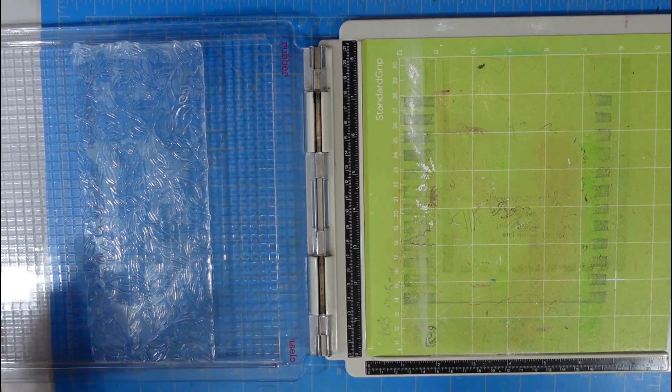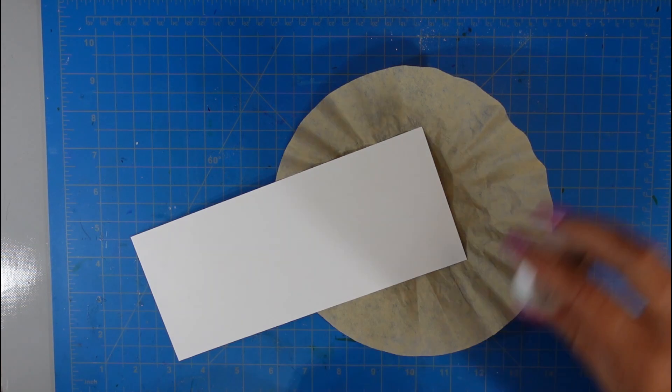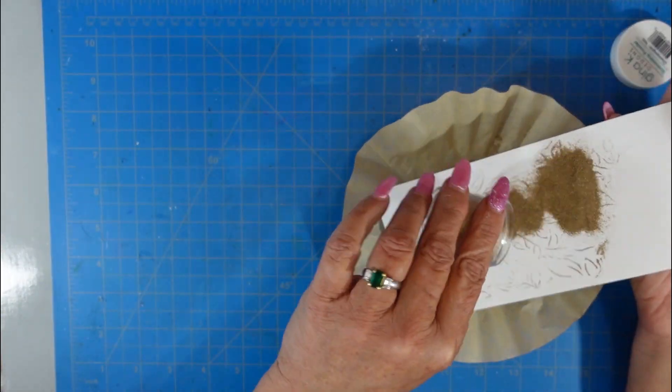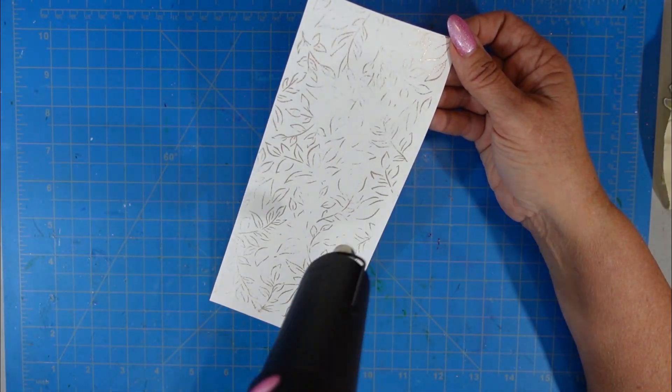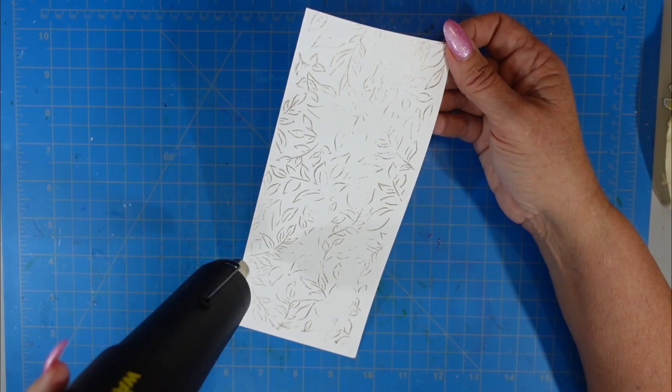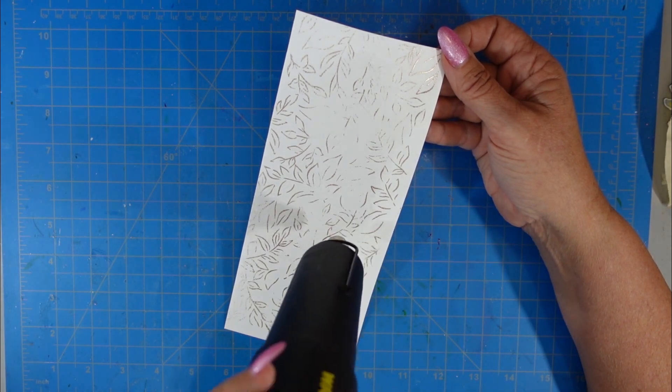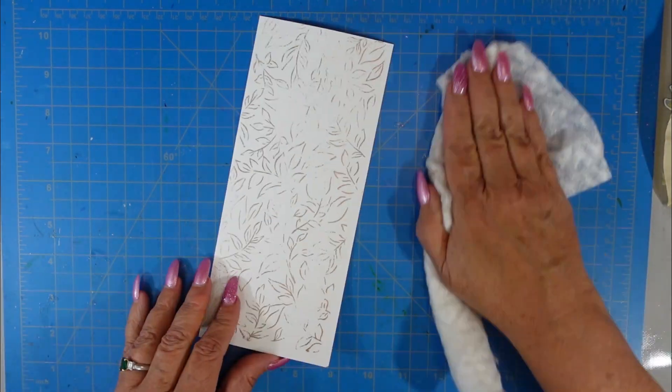For me, it turned out to be a happy accident. Normally I would want that perfect, crisp stamping, but when I looked at it, it looked very vintage, very worn, and I liked the look of it. So I decided to go ahead and embrace it. I brought in that Ornate Banner die. I used the middle size and I went with this imperfect panel.